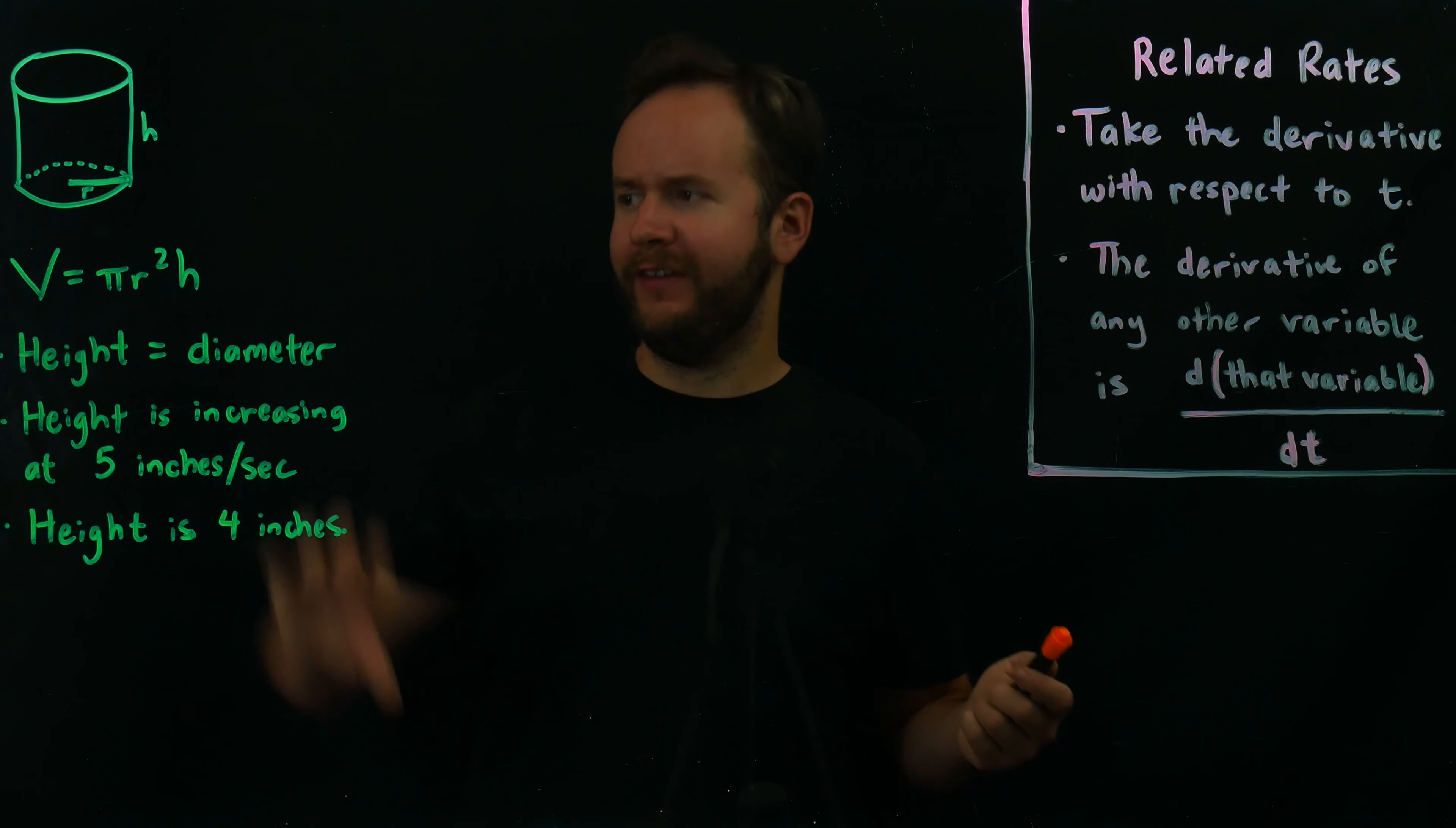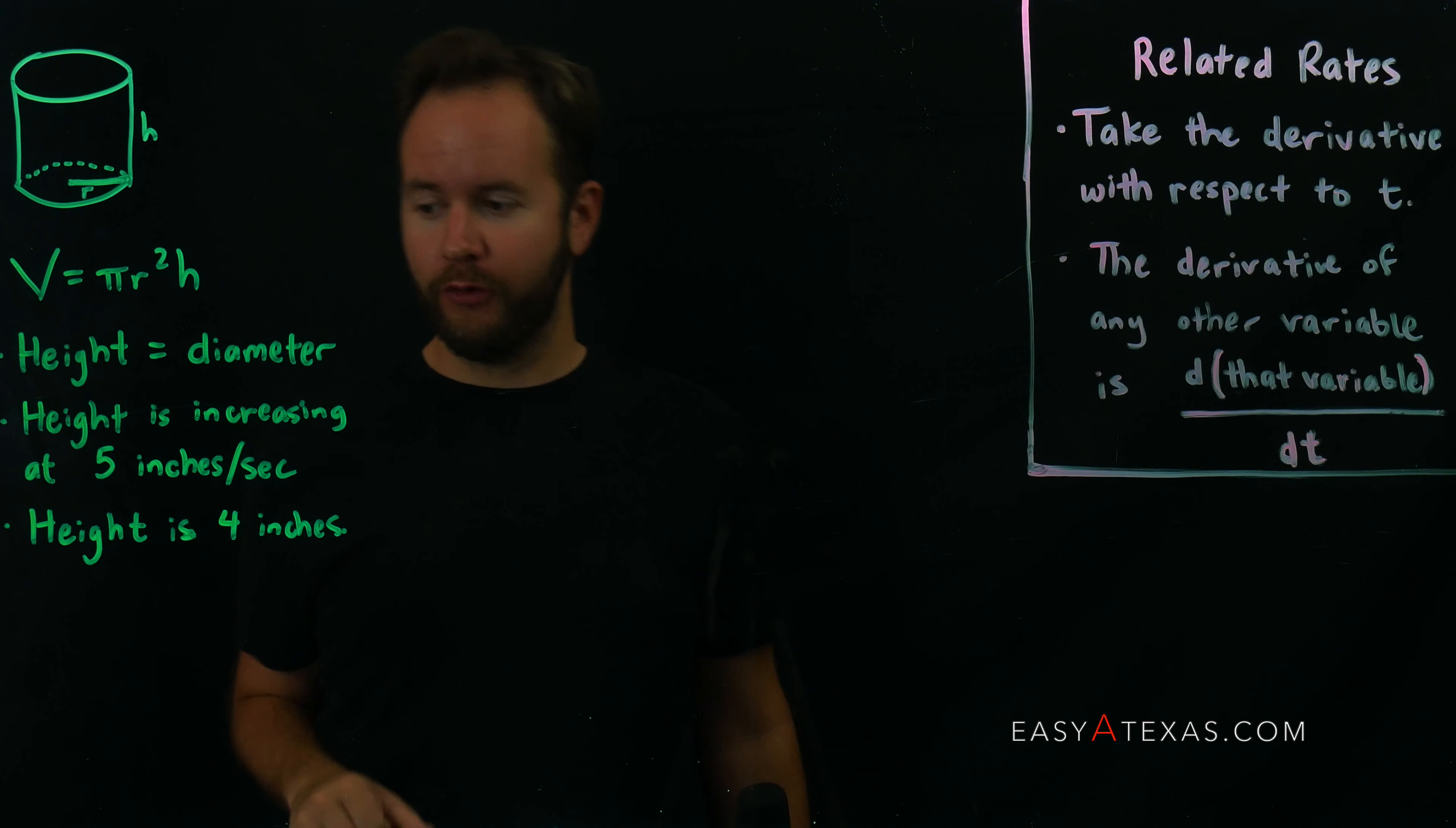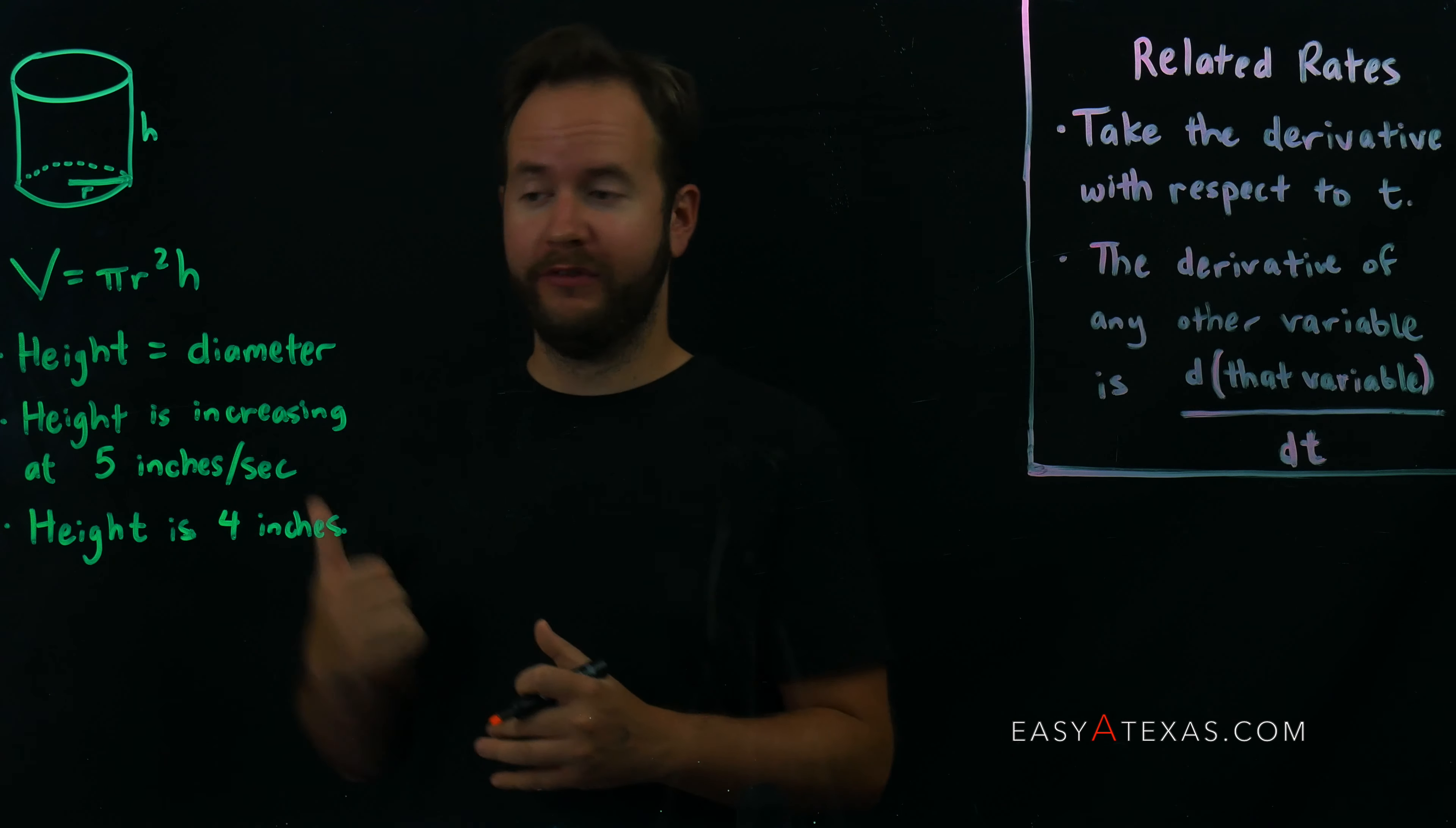Alright, we have a related rates problem with all this information. We're talking about a cylinder whose height is equal to its diameter. The height is increasing at 5 inches per second, and the height is 4 inches. We're going to combine all these factoids about this little cylinder into a little trick that'll help us solve this problem.